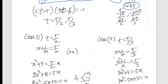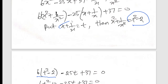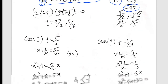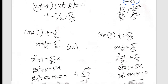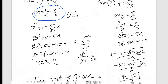3t minus 5 gives t equals 5 by 2 and t equals 5 by 3. If case 1, t equals 5 by 2, and t: x plus 1 by x equals t, so x plus 1 by x equals 5 by 2. Multiply through: 2x squared minus 5x plus 2 equals 0. Factor it: x minus 2, 2x minus 1. So x equals 2 and x equals 1 by 2.